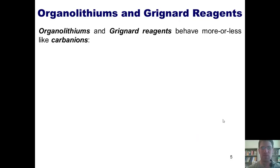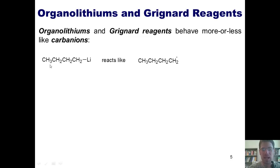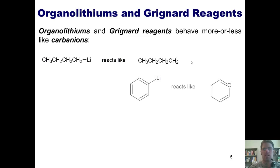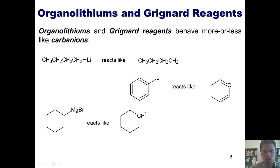So what can we do with these types of reagents? Organolithiums and Grignard reagents behave more or less like carbanions. For example, butyllithium behaves as if there's a negative charge on the carbon bonded to the lithium. Similarly, phenyllithium reacts as if there were a negative charge on that carbon. Likewise, a Grignard reagent behaves as if there's a negative charge on the carbon bonded to the magnesium — as with vinyl magnesium bromide.